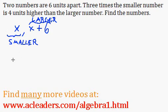So three times the smaller number, so 3x is four units higher than the larger number. So actually, let me just put the equal sign right here. So the larger number is here.